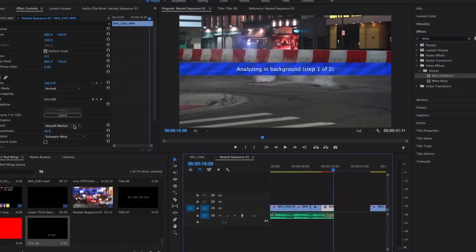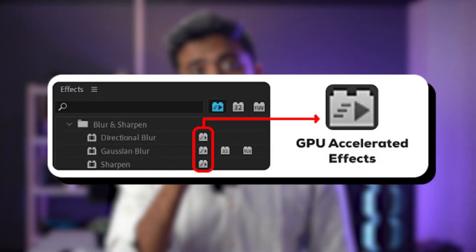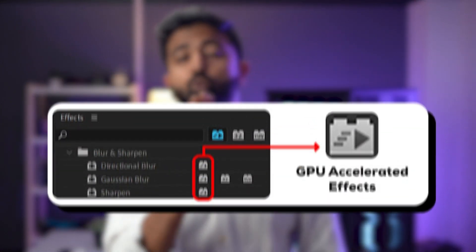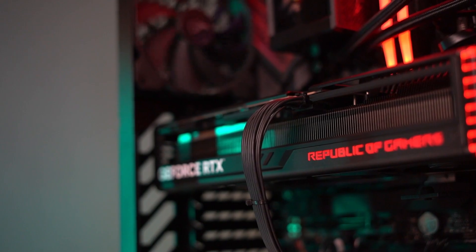The GPU has mainly two jobs: speed up rendering and accelerate effects that require 3D calculations. Which effects does the GPU accelerate? That's actually mentioned in the software. In the effects panel, if you see this icon, that means it's a GPU-dependent or GPU-accelerated effect. Depending on how many GPU effects you use and if you are exporting to H.264, you can really benefit from having a good GPU.